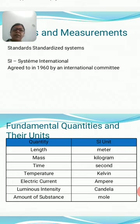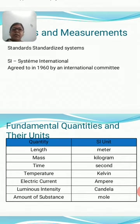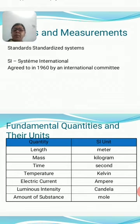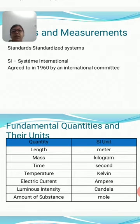I hope you understand that a physical quantity is anything which can be measured. There are 7 fundamental quantities which do not depend upon other quantities — they are independent. Accordingly, we have 7 fundamental quantities and 7 corresponding fundamental units.